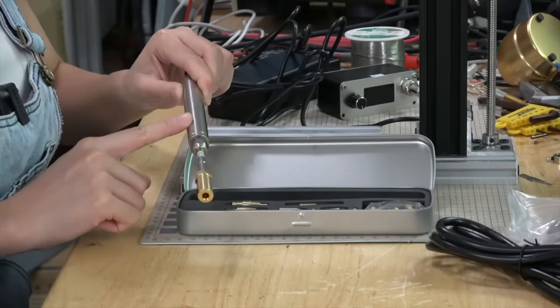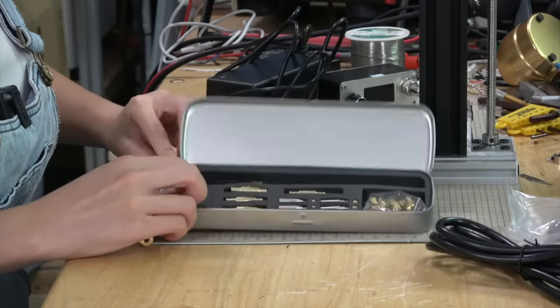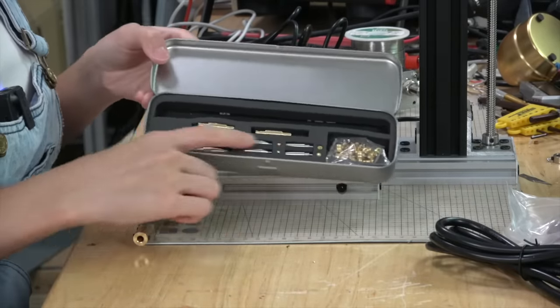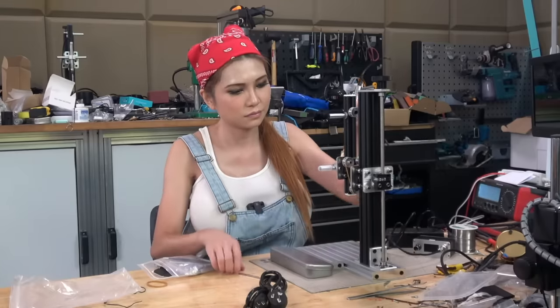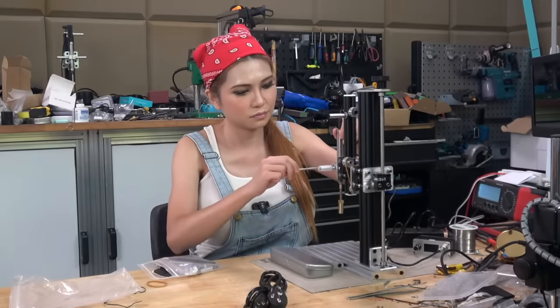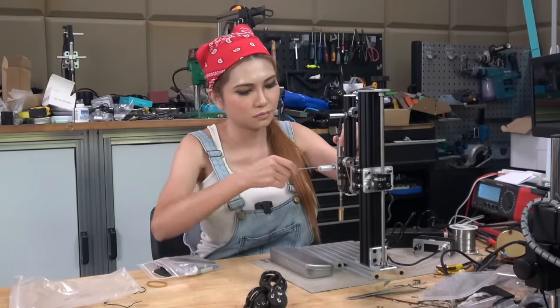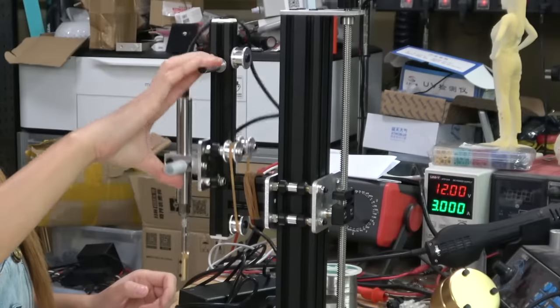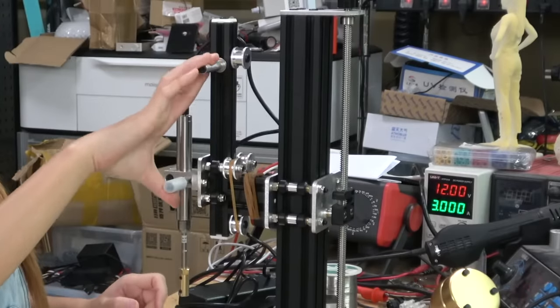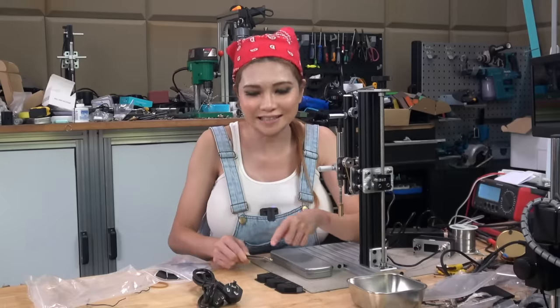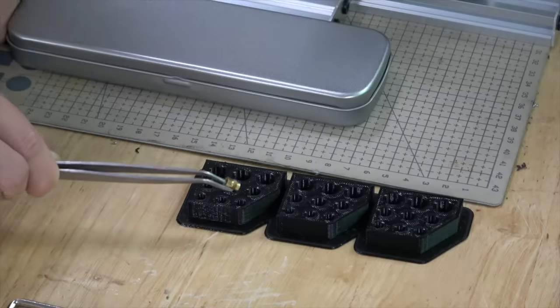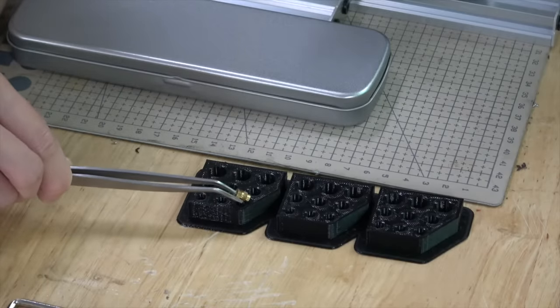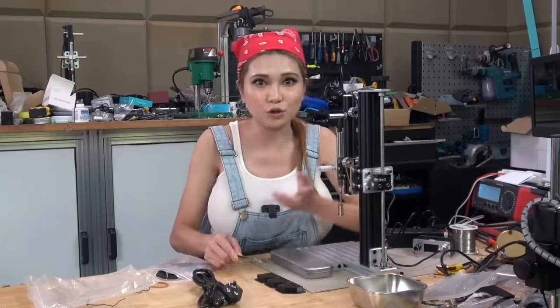It's basically a high quality soldering iron with some special tips. What we use it for is to take these knurled nuts and neatly melt them into place in our 3D prints. Let me show you how to do that.